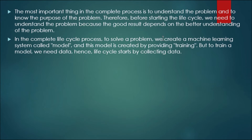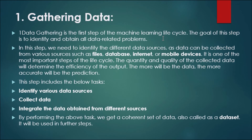This model is created by providing training data. But to train a model, we need data. Hence the life cycle starts by collecting data. Gathering data is the first step of the machine learning life cycle. The goal of this step is to identify and obtain all data related to the problem. In this step, we need to identify different data sources, as data can be collected from various sources such as files, databases, internet, or mobile devices.